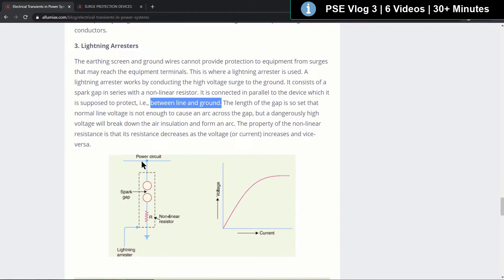So in parallel it's connected, here's the line and then here's the ground, and then you have the spark gaps and the non-linear resistor.